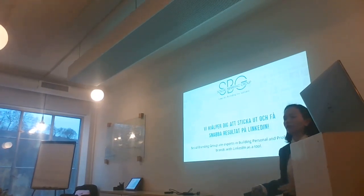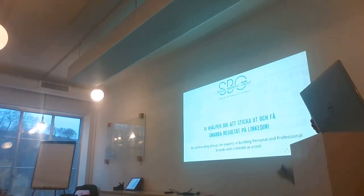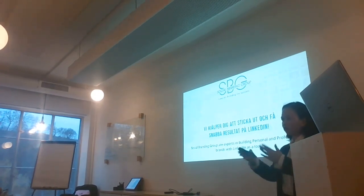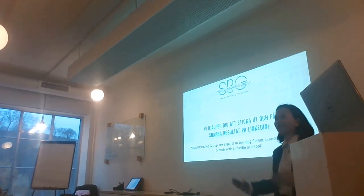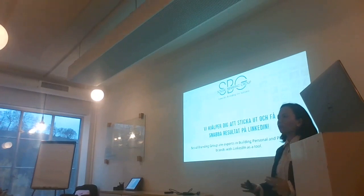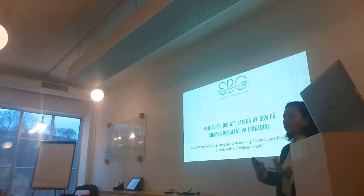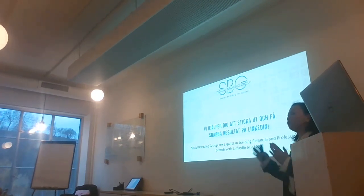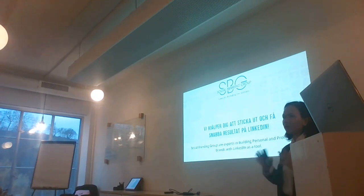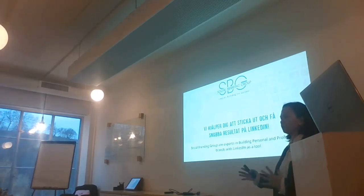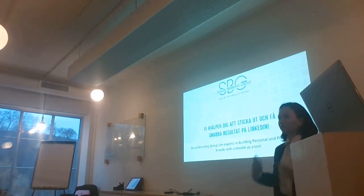We've already implemented an automation — version one — which they're currently using for their feedback factory. But Social Branding Group is expanding and offering more products and services such as eBooks, webinars, eCourses, and coaching sessions. So we need to build and update the system as version two. I'm going to show you an overview of how we use SharpSpring to implement this automation — another way to use SharpSpring to automate an internal process that would otherwise require more manual assistance.